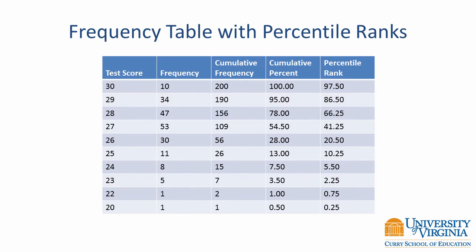Percentile ranks have been added to the frequency table shown earlier. Notice how the percentile ranks are slightly less than the cumulative percentages. For example, for a score of 25, the cumulative percent is 13, but the percentile rank is 10.25. This difference is due to the adjustment applied to the percentile ranks to make it reflect the midpoint of the interval.